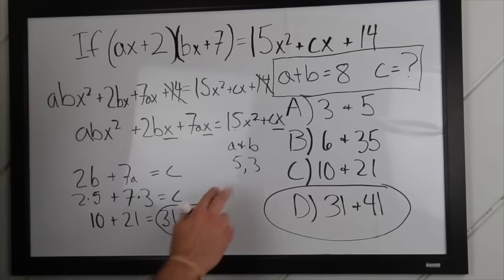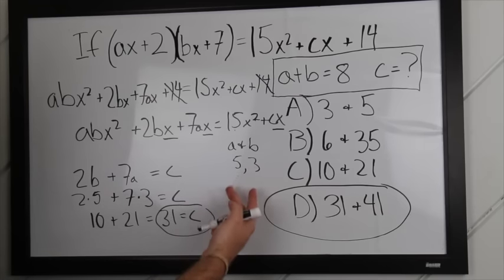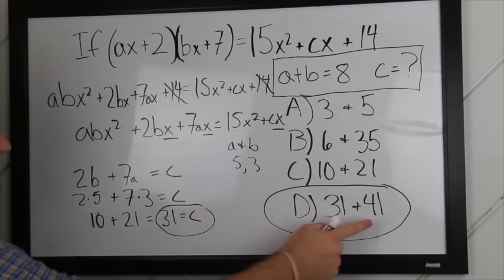However, if you wanted to, you could check it by switching the 5 and the 3 to make it a 3 and a 5. Put them into our equation and you would have gotten 41.